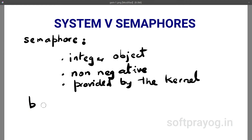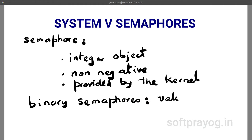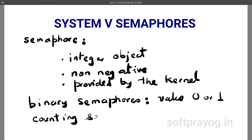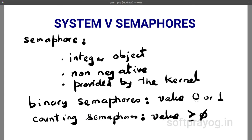There are two types of semaphores. Binary semaphores: a binary semaphore can have value zero or one. Counting semaphores: the value can be greater than or equal to zero — that is, a counting semaphore can have value zero, one, two, three, four, etc.